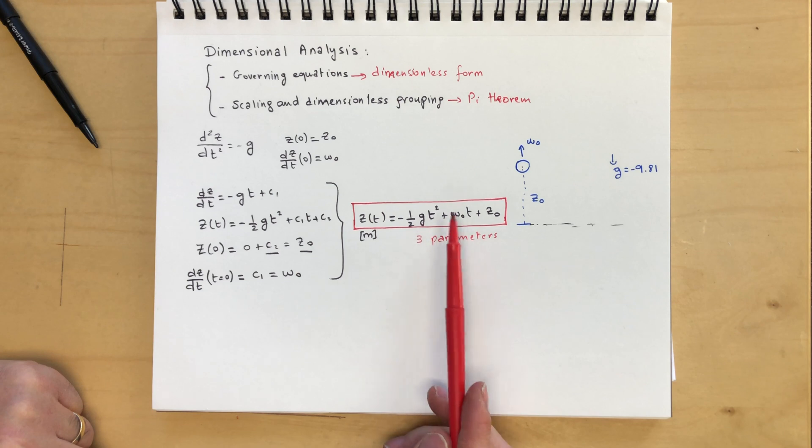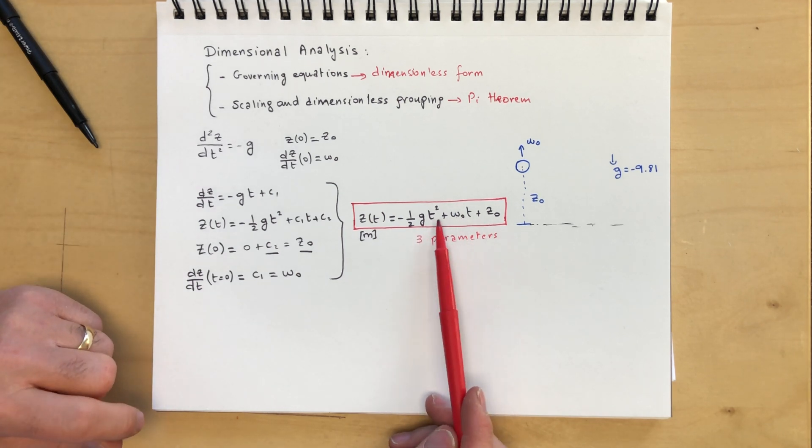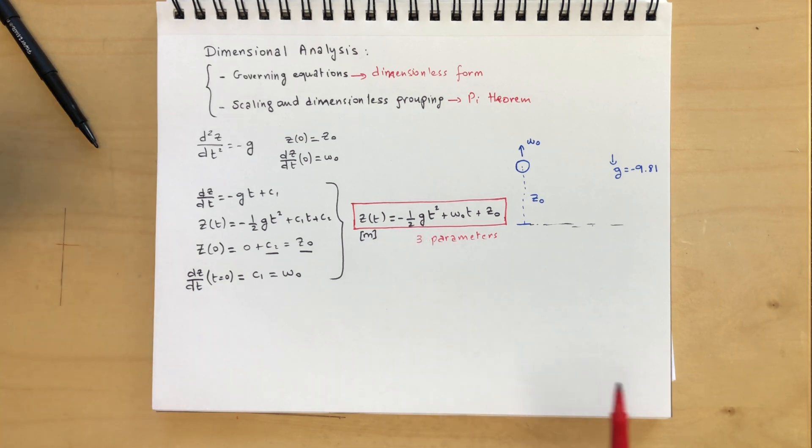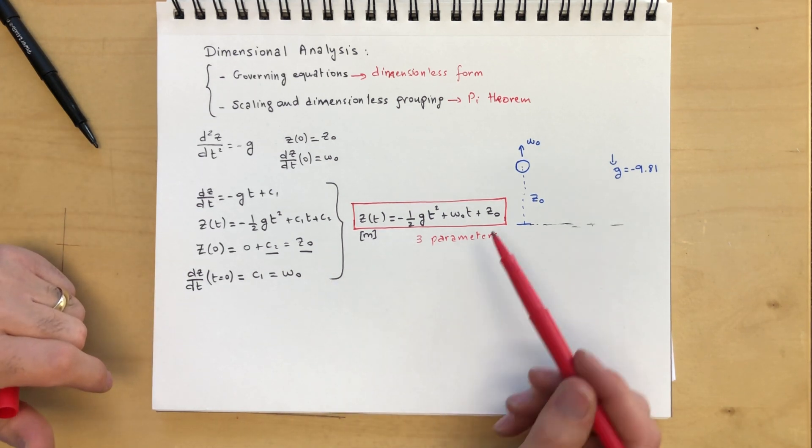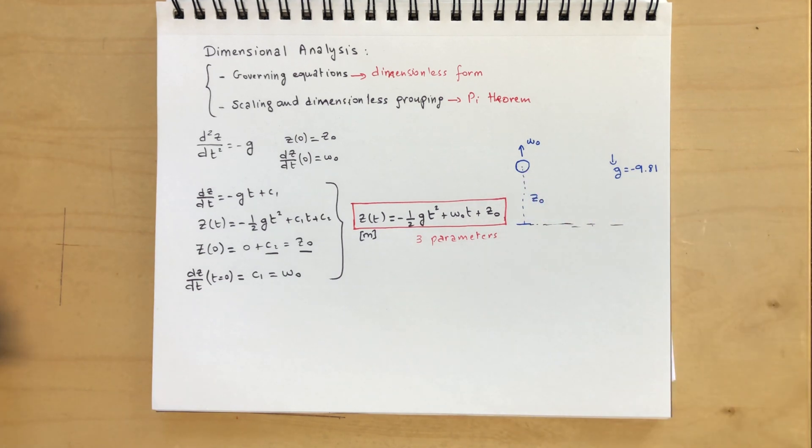And then you would go and fix g, and z0, and change w0, and make another plot. And you would go fix w0, z0, and change g, and make a plot. So you would end up with hundreds of plots, just to try to get an idea of how the motion of the ball behaves.